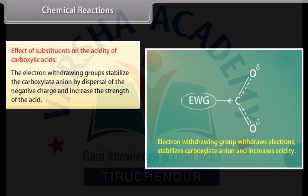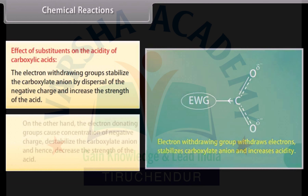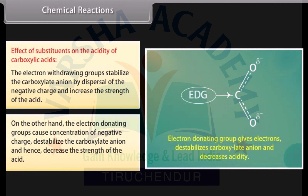Effect of substituents on the acidity of carboxylic acids: electron-withdrawing groups stabilize the carboxylate ion by dispersal of the negative charge and increase the strength of the acid. On the other hand, electron-donating groups cause a concentration of the negative charge, decreasing acidity.